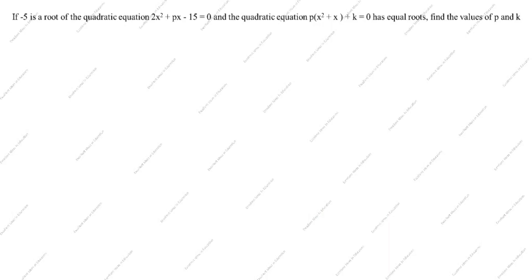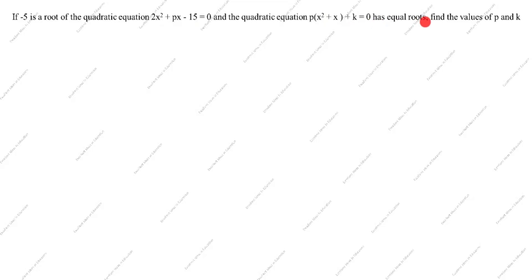Hi friends, welcome to my channel Excellent Ideas in Education. Today we are going to solve this polynomial problem. This is a board exam problem. If minus 5 is the root of the quadratic equation 2x² + px − 15 = 0, and the quadratic equation p(x² + x) + k = 0 has equal roots, find the values of p and k.